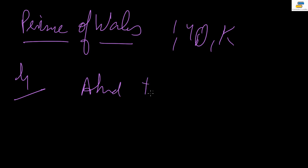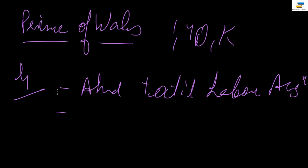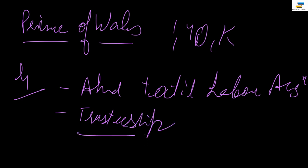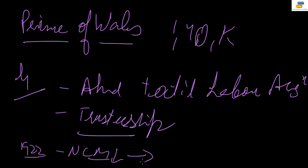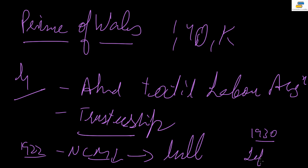Gandhi formed the Ahmedabad Textile Labor Association. Gandhi's idea was of trusteeship — that the capitalist is the trustee of the workers' interest. His idea of capitalism was based on the concept of trusteeship: the welfare of the labor has to be ensured by the capitalist. From 1922 onwards, after the NCM was withdrawn, there was again a lull period in the working class movement. The next wave came only at the end of the 1920s, around 1930, with the rising influence of the left bloc and communism and socialism.